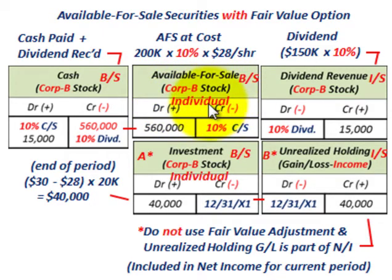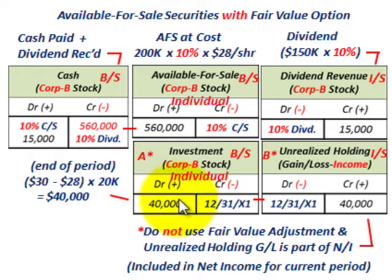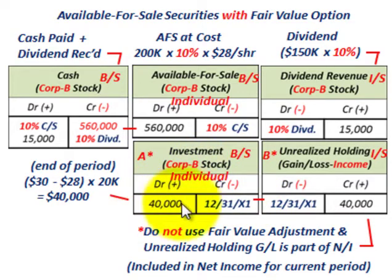With the fair value option, there's no separate fair value adjustment or valuation account in the same way. Instead, you set up an investment account labeled for the specific security — in this case Corp B stock — on an individual basis. At period end, you compare market price $30 versus cost $28 per share times 20,000 shares, again $40,000. You debit the investment account for $40,000 on an individual basis for your reporting period 12/31/X1. It acts similarly to the valuation account above, but it's separated on an individual security basis.